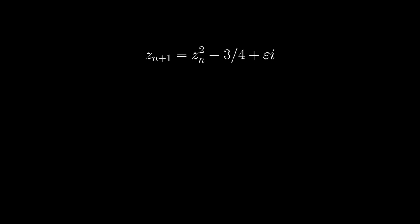This leads to a very interesting formula. The number of iterations at minus 3 quarters plus i times epsilon, multiplied by epsilon, approaches pi as epsilon approaches zero.